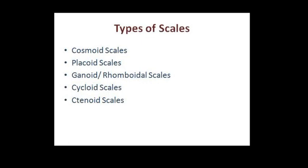There are five types of scales present in fishes: cosmoid, placoid, ganoid which are also known as rhomboidal scales, cycloid scales, and ctenoid scales.